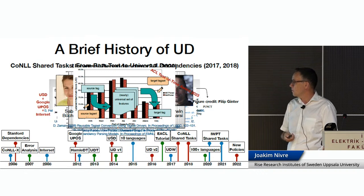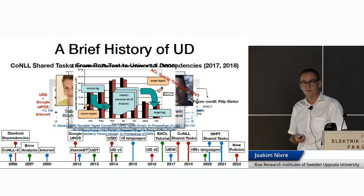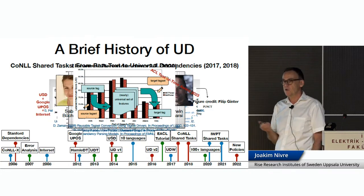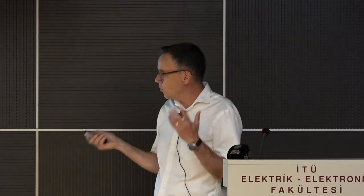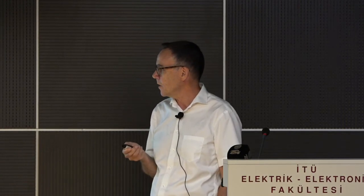At about the same time, we also saw the launch of the Stanford type dependencies coming out of Stanford with Marie de Marneffe and Chris Manning as the major contributors. This was not really an annotation scheme at the time — it was rather a representation. In those days, most parsers produced phrase structure representations, but people found that for certain natural language understanding applications, it was more useful to have dependency representations. So this was basically a conversion from phrase structure trees to a particular type of dependency representation.